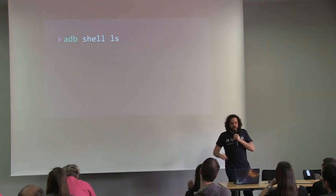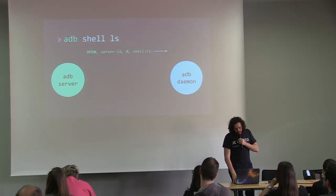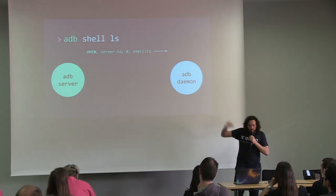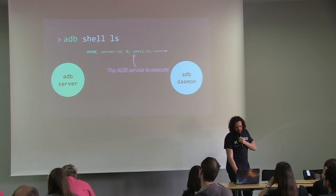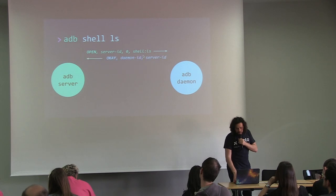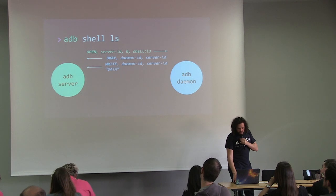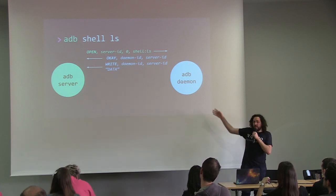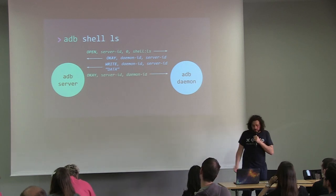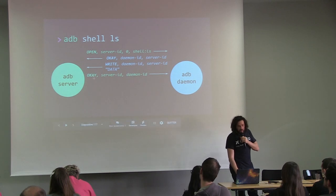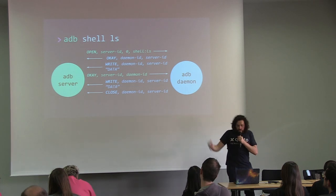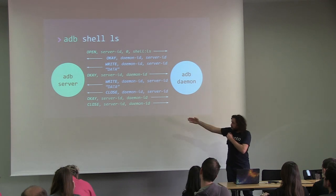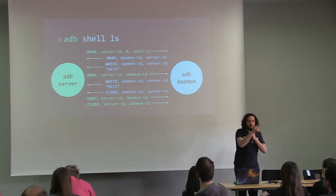Another example — `adb shell ls`. The ADB server opens a connection to the daemon using the `OPEN` command, with `shell:ls`. The ADB daemon answers okay, then starts answering with `WRITE` verbs. The ADB server answers okay. The daemon waits for the okay before sending the next write — so there's an acknowledgement between each write and okay. When it finishes, it sends `CLOSE` at the same time, and the ADB server answers okay for the write and close for the close.